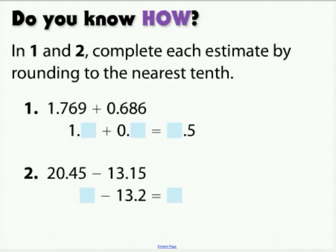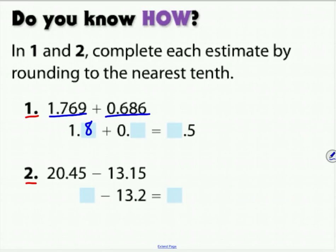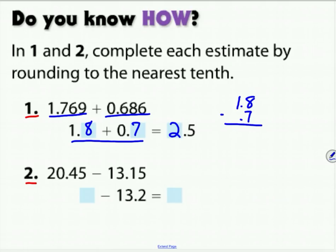Try a couple problems on your own — pause the video and estimate your answers for problems one and two. For problem one: 1.769 rounds to 1.8, and 0.686 rounds to 0.7. Adding those gives 2.5. Eight plus seven is fifteen, carry the one, and you end up with 2 and 5 tenths.